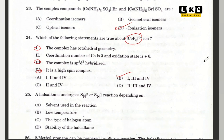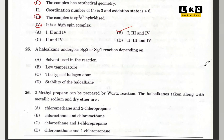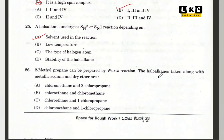Question number 25: a haloalkane undergoes SN2 or SN1 reaction depending upon the solvent used in the reaction. Option A is correct. Question number 26: 2-methylpropane can be prepared by Wurtz reaction. The haloalkanes taken along with metallic sodium and dry ether — option A is correct.